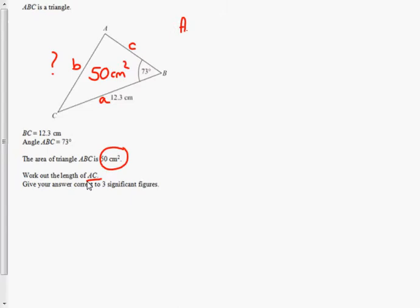So one thing we could write is that the area is equal to half of AC multiplied by the sine of angle B. And that would enable us to find the length of side C. And if we could find the length of side C, then we could use the cosine rule to find the length of side B.